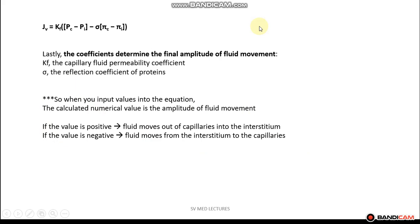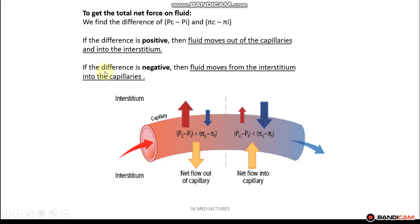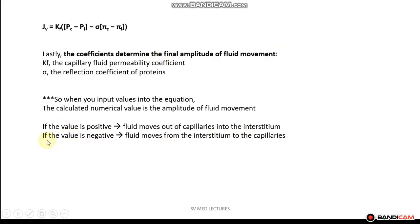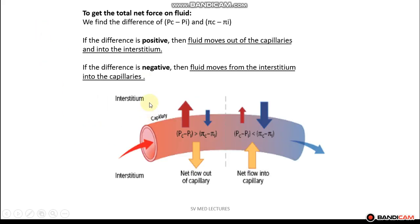Putting everything together, the calculated numerical value represents the amplitude of fluid movement, whereas the sign in front of the numerical value represents the direction of fluid movement. If the sign is positive, fluid will move out of the capillaries and into the interstitium, whereas if the sign is negative, fluid will move from the interstitium into the capillaries.